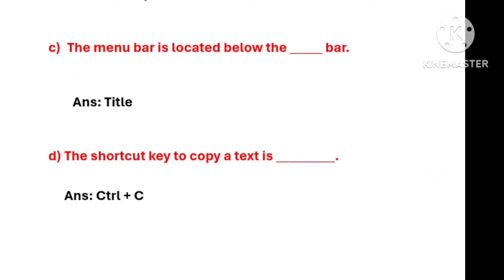Question number C: the menu bar is located below the dash bar. The correct answer will be: the menu bar is located below the title bar. And the last fill in the blank: the shortcut key to copy a text is dash. The shortcut key to copy a text is Ctrl+C.